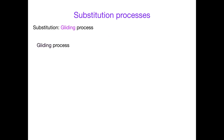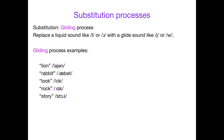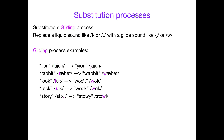Now let's talk about gliding. The idea is simply to replace a liquid sound — in English these are L and R — with a glide sound, which in English is 'ya' and 'wa'. So 'la' and 'ra' become 'ya' and 'wa'. Lion can become 'yaian' or 'waian'. Rabbit becomes 'yabbit' or 'wabbit'. Look becomes 'yuk' or 'wuk'. Rock becomes 'yak' or 'wak'. Story becomes 'stoey' with the 'ya' sound or 'stoey' with the 'wa' sound.